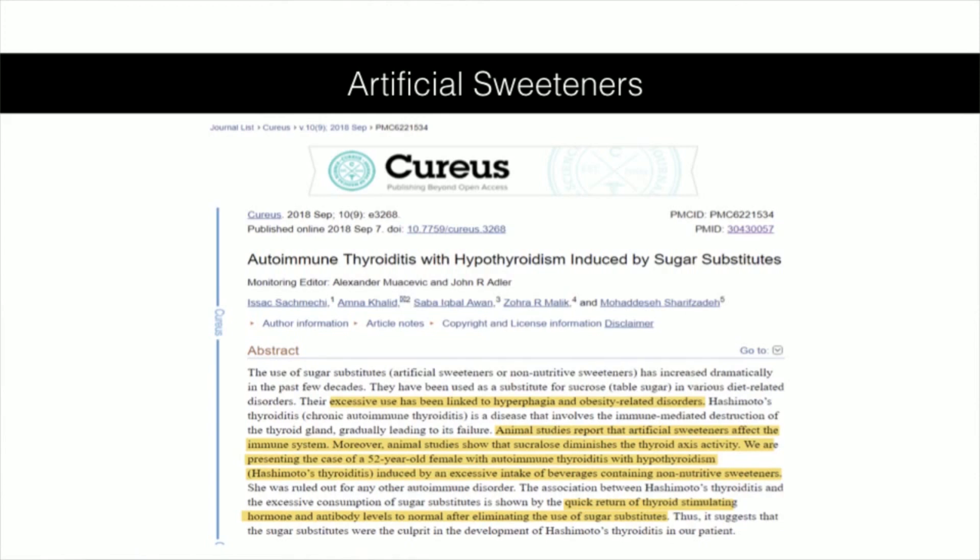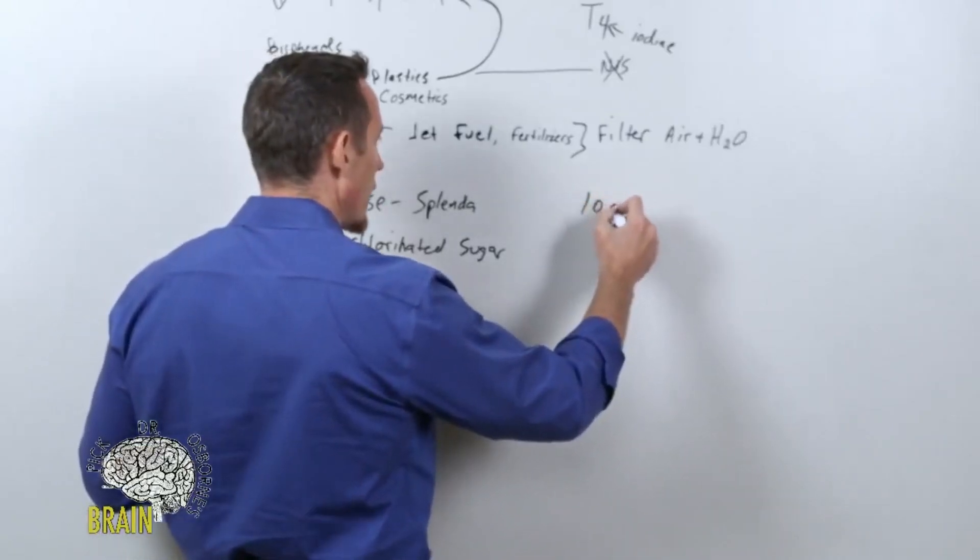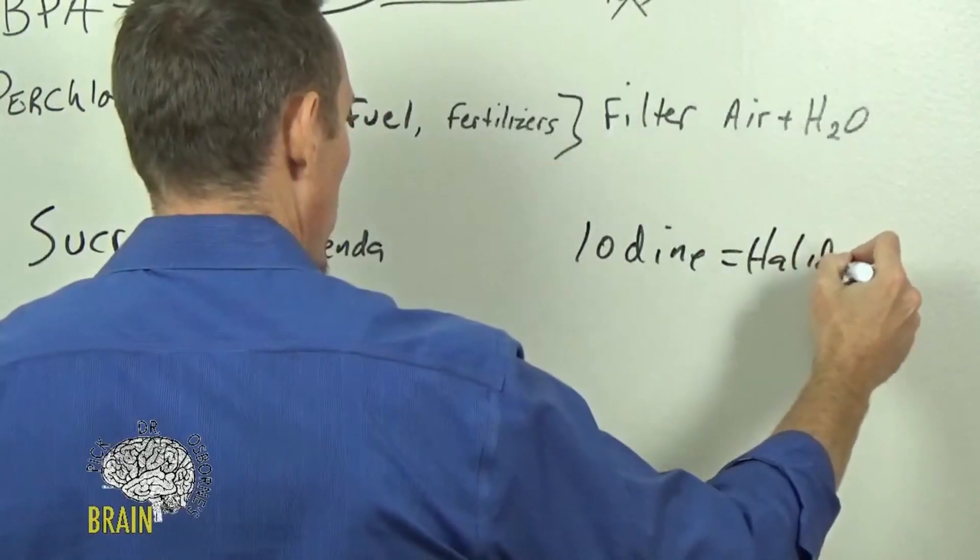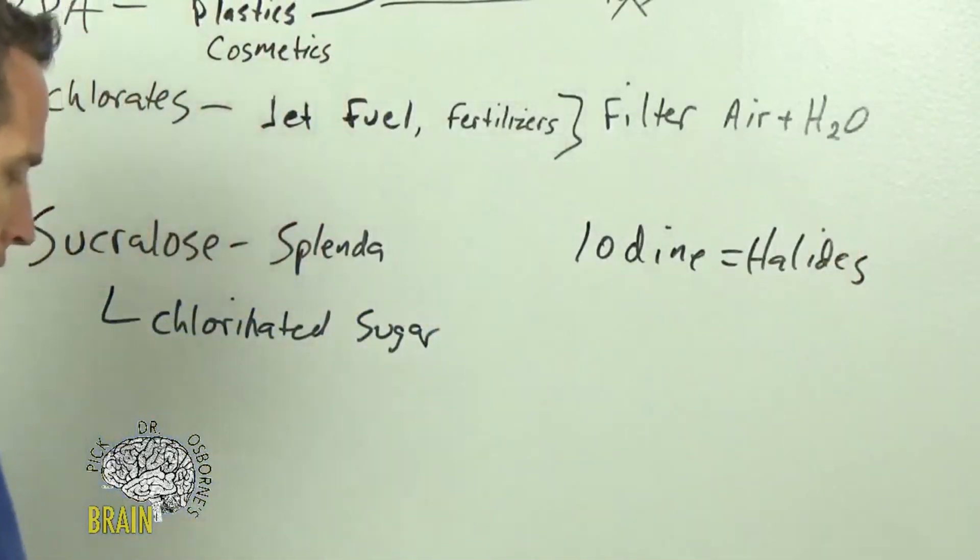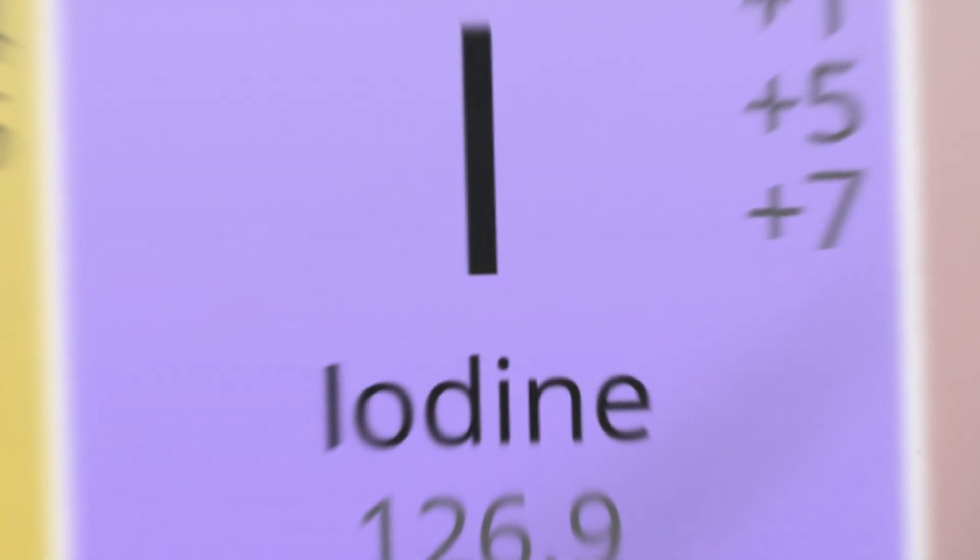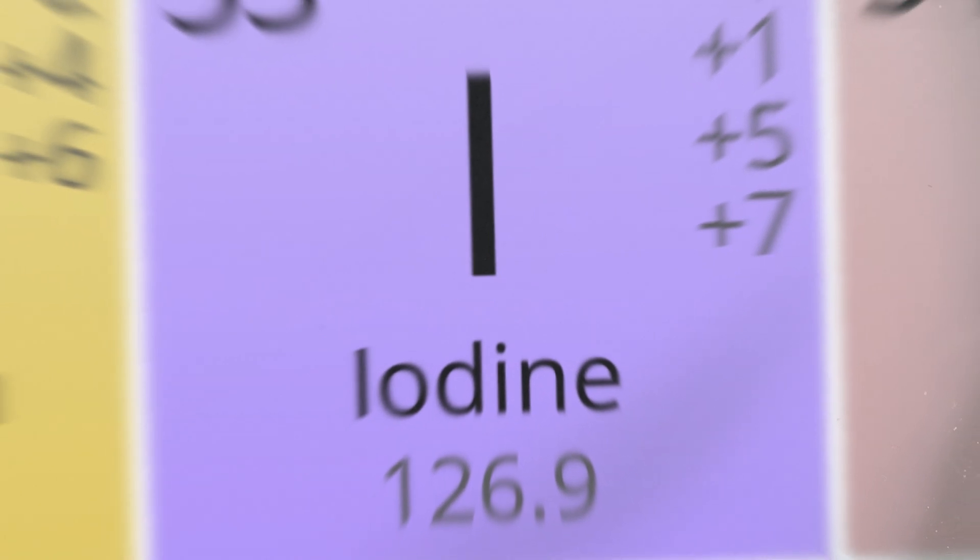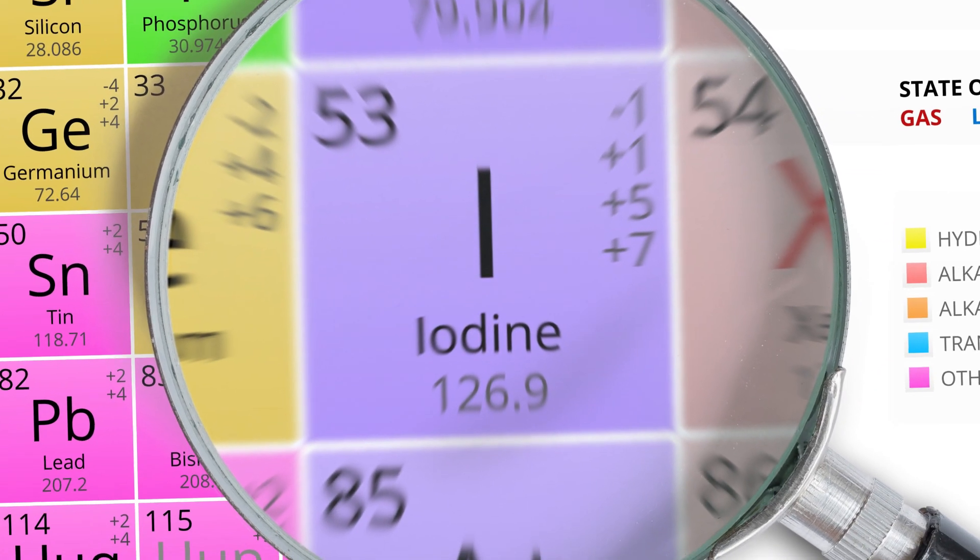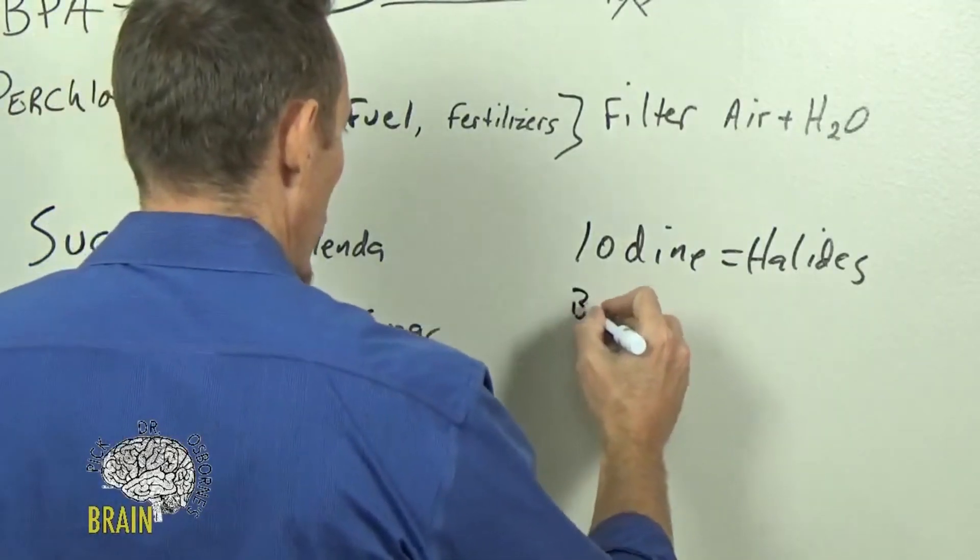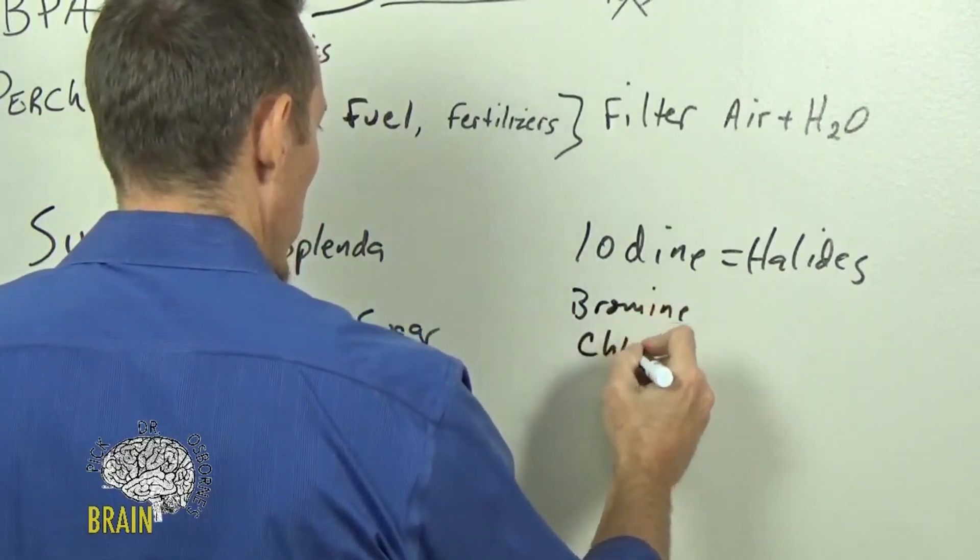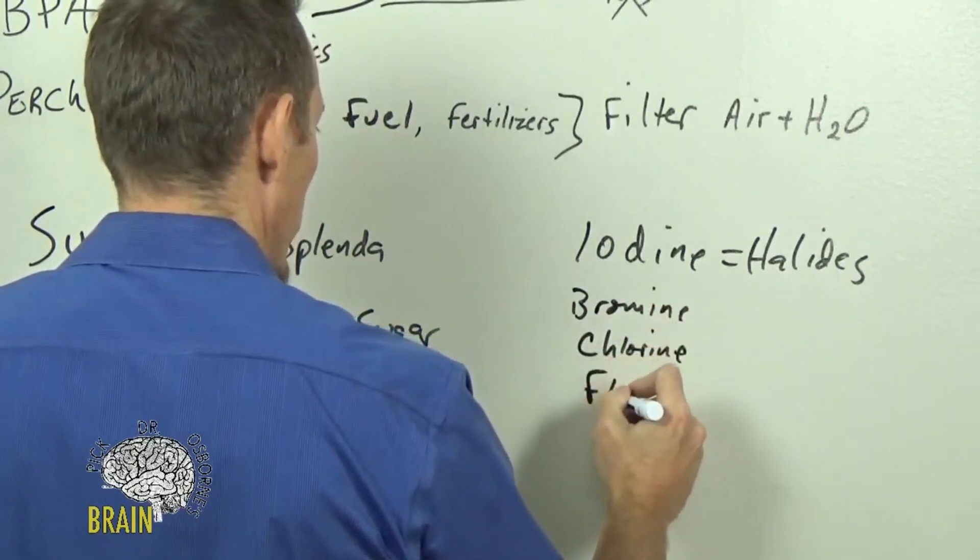If you're a big fan of these artificial sweeteners, particularly Splenda, one of the reasons why this is a problem is iodine. Iodine is also known as a halide, and halides are a grouping. If you remember the periodic table of elements, there's a grouping called halides that includes iodine, bromine, chlorine, and fluoride.